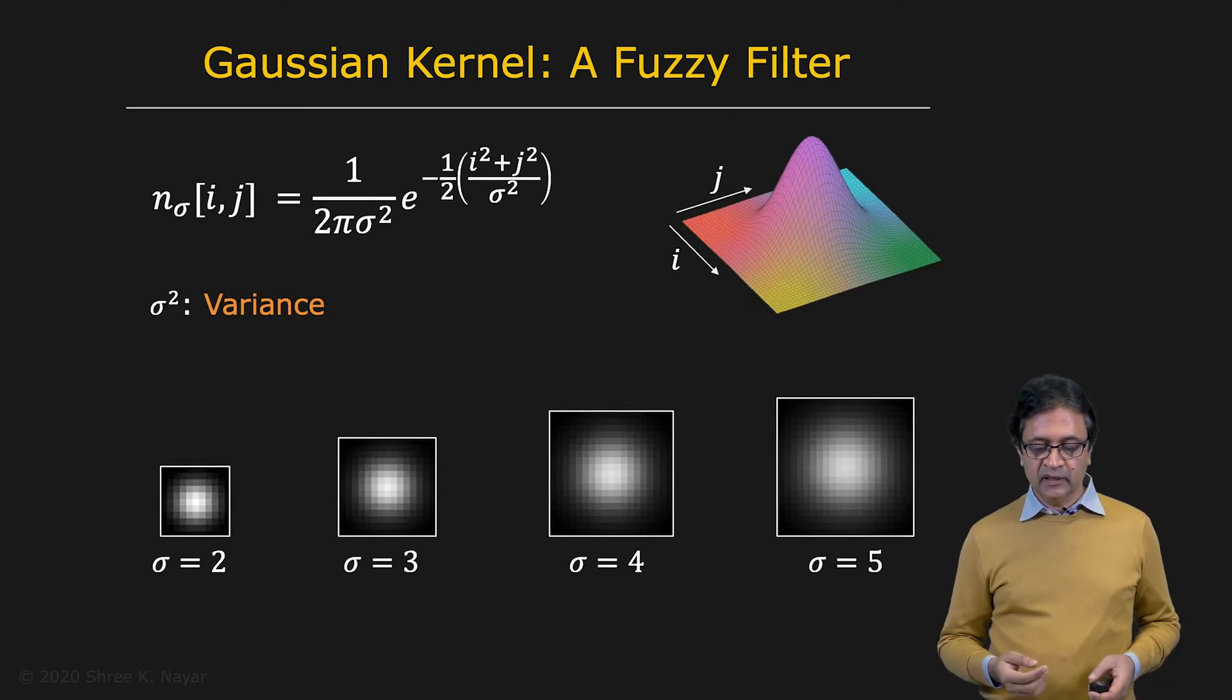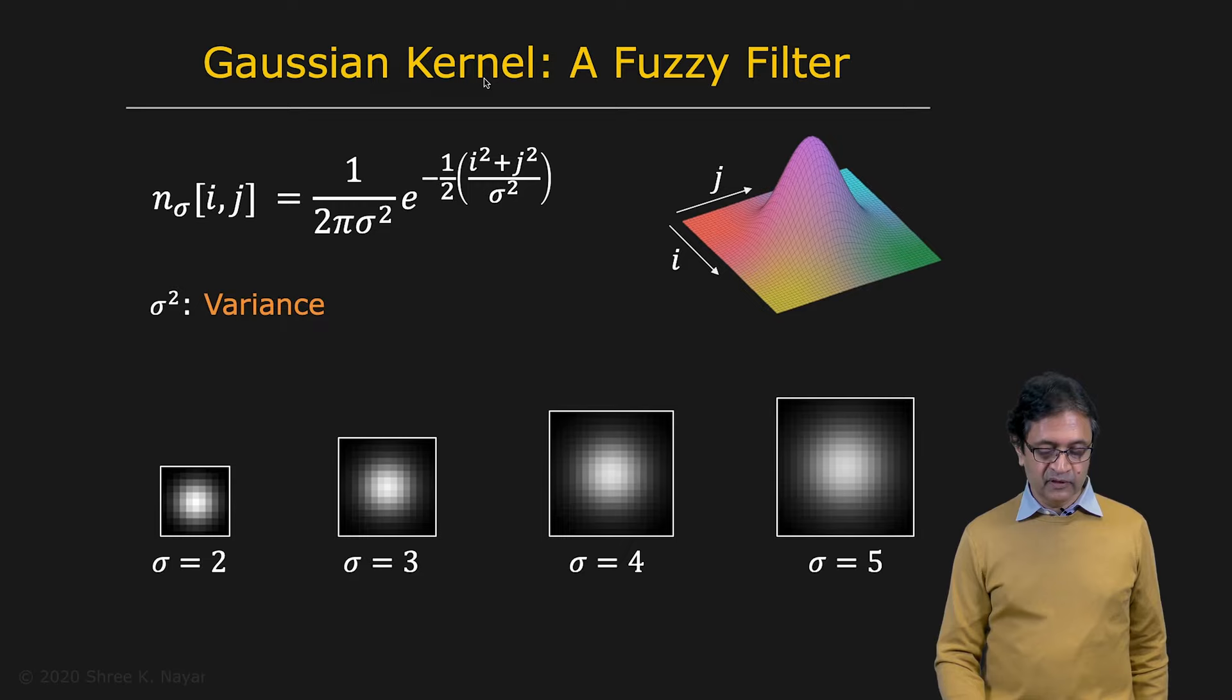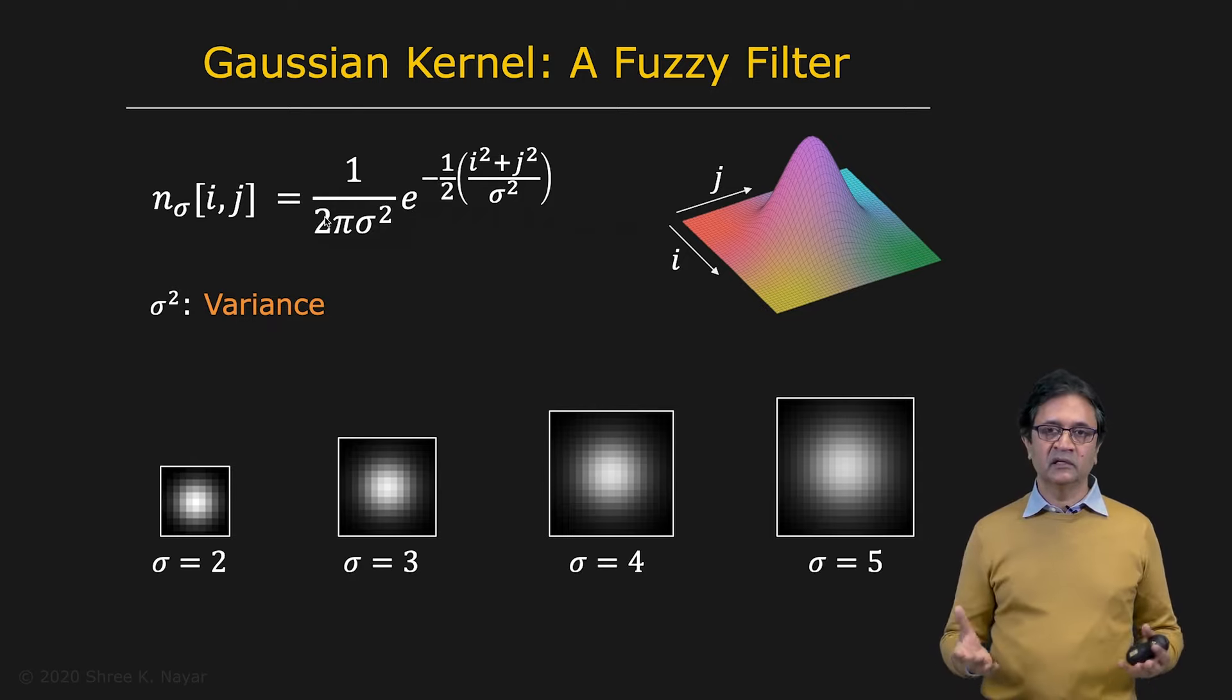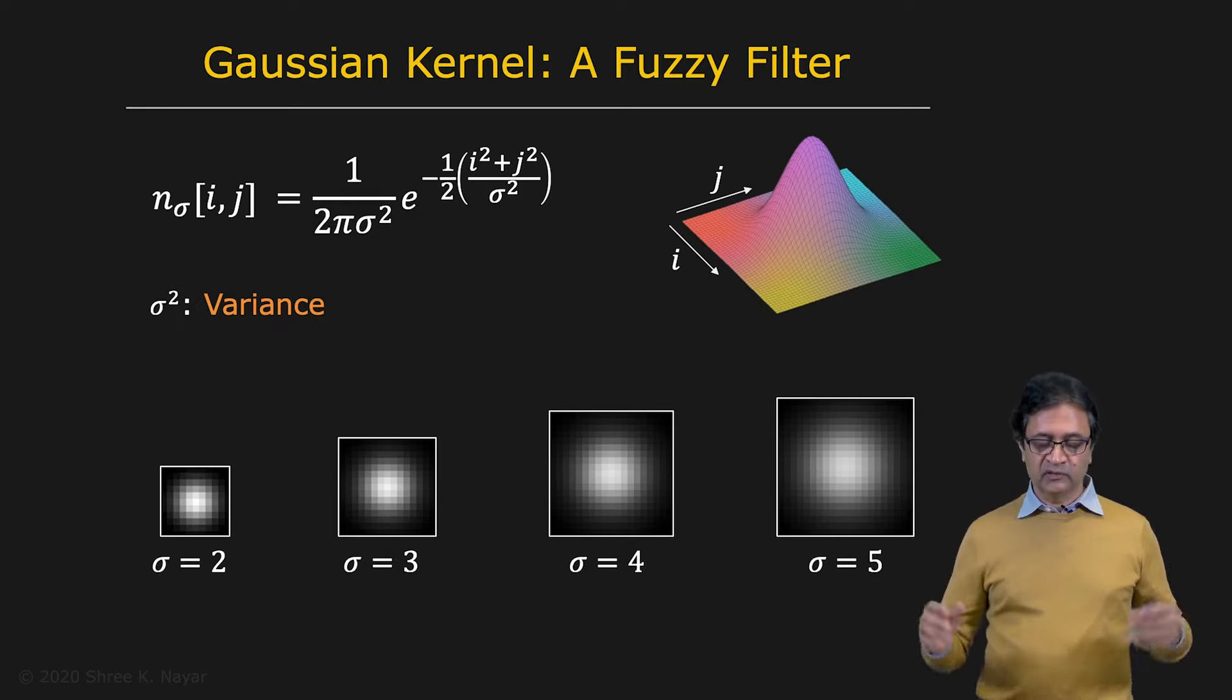So this fuzzy filter can be formalized using the Gaussian function, which is very popular. So you can create a Gaussian mask or a Gaussian kernel or a Gaussian filter. That becomes your fuzzy filter. This is what your Gaussian looks like. And you know the Gaussian function. In discrete domain, it's n_sigma_ij. That's the function, ij, equal to 1 over 2 pi sigma squared, e to the power of minus half (i squared plus j squared) divided by sigma squared. ij are the row and column pixel location. And sigma is the standard deviation. Sigma squared is the variance. So the larger the sigma, the broader the Gaussian is. But what's important to note here is, irrespective of how broad the Gaussian is, it's always normalized by 2 pi sigma squared. This is important so as to make sure that the area under the Gaussian is the same, always, irrespective of the size of the Gaussian mask that you create.